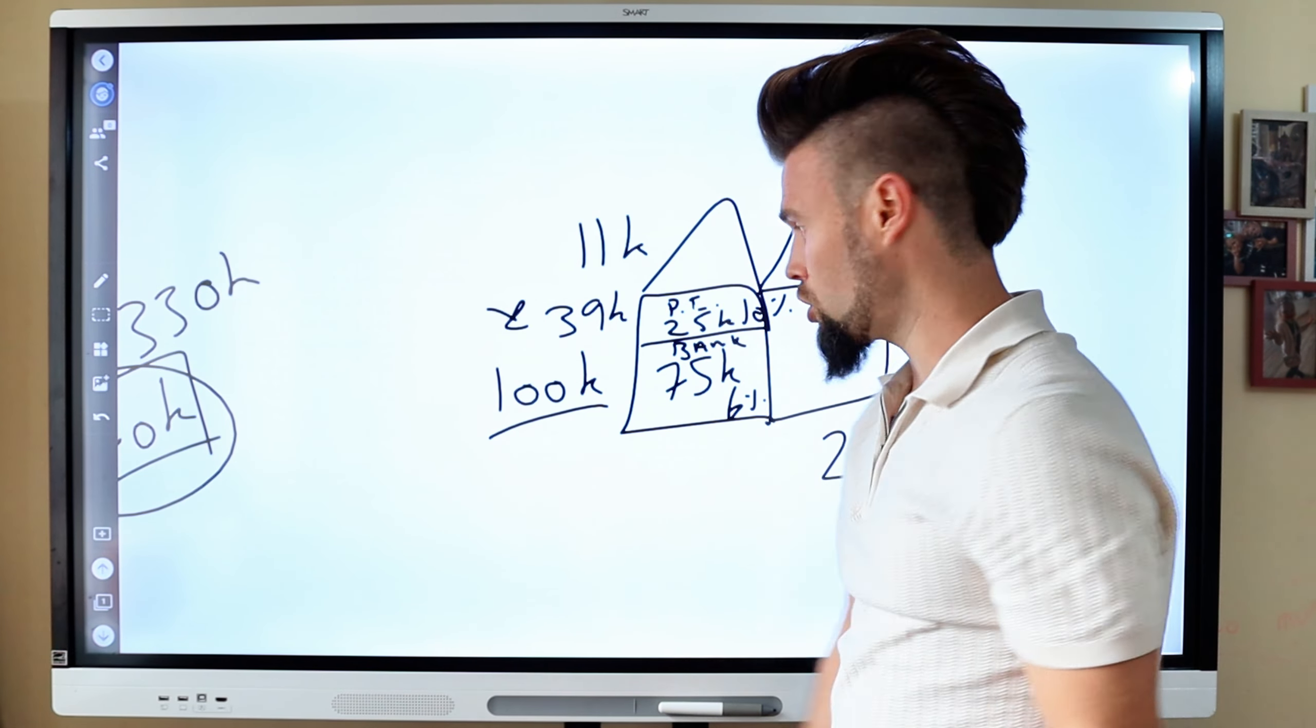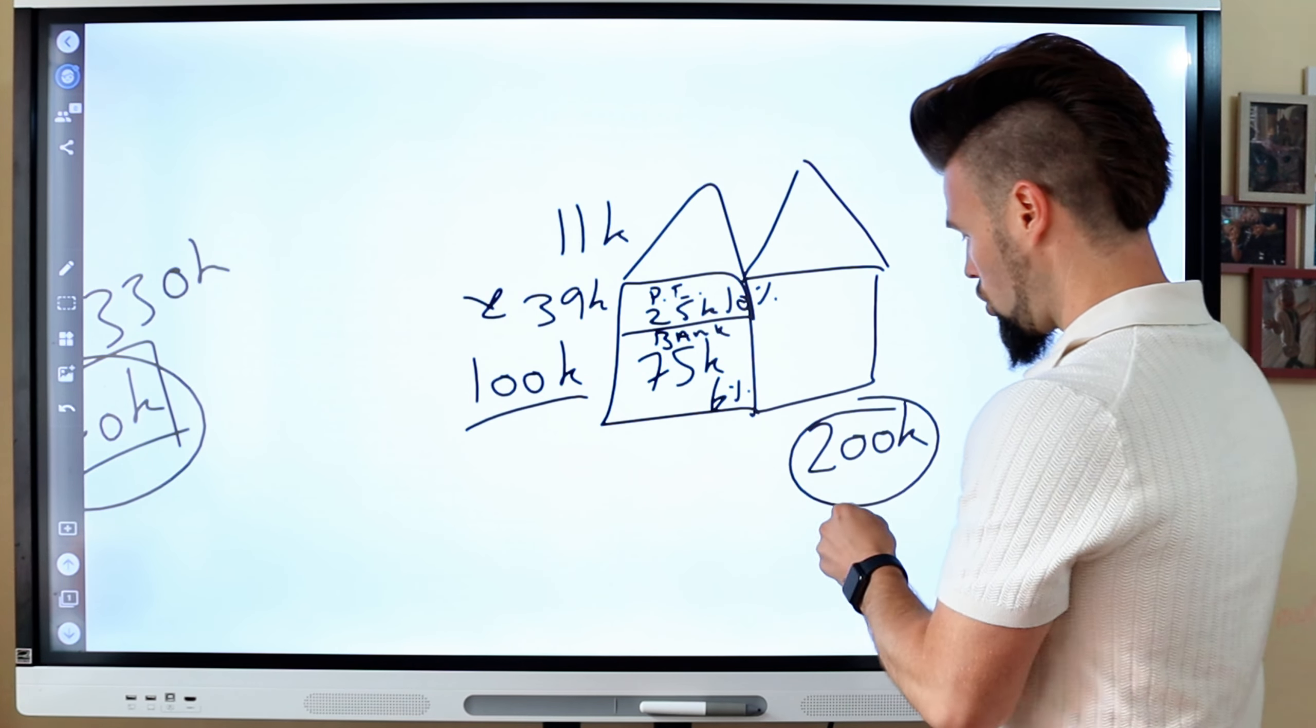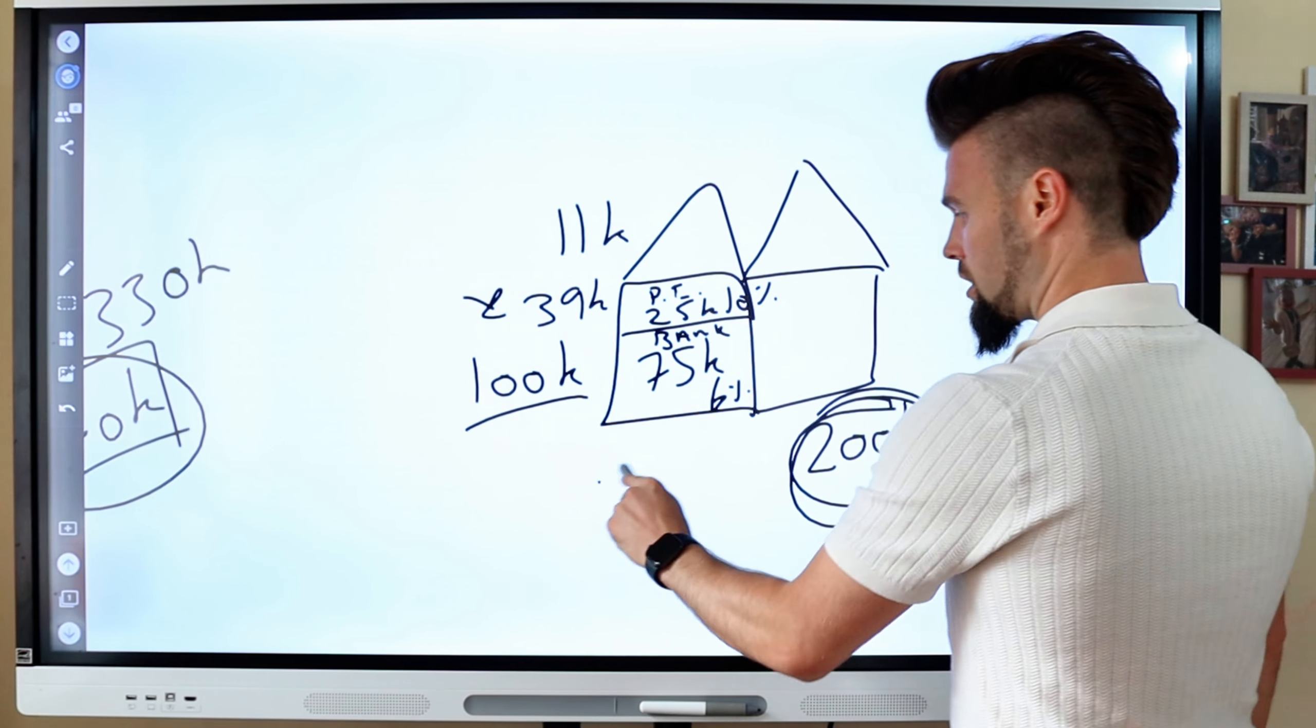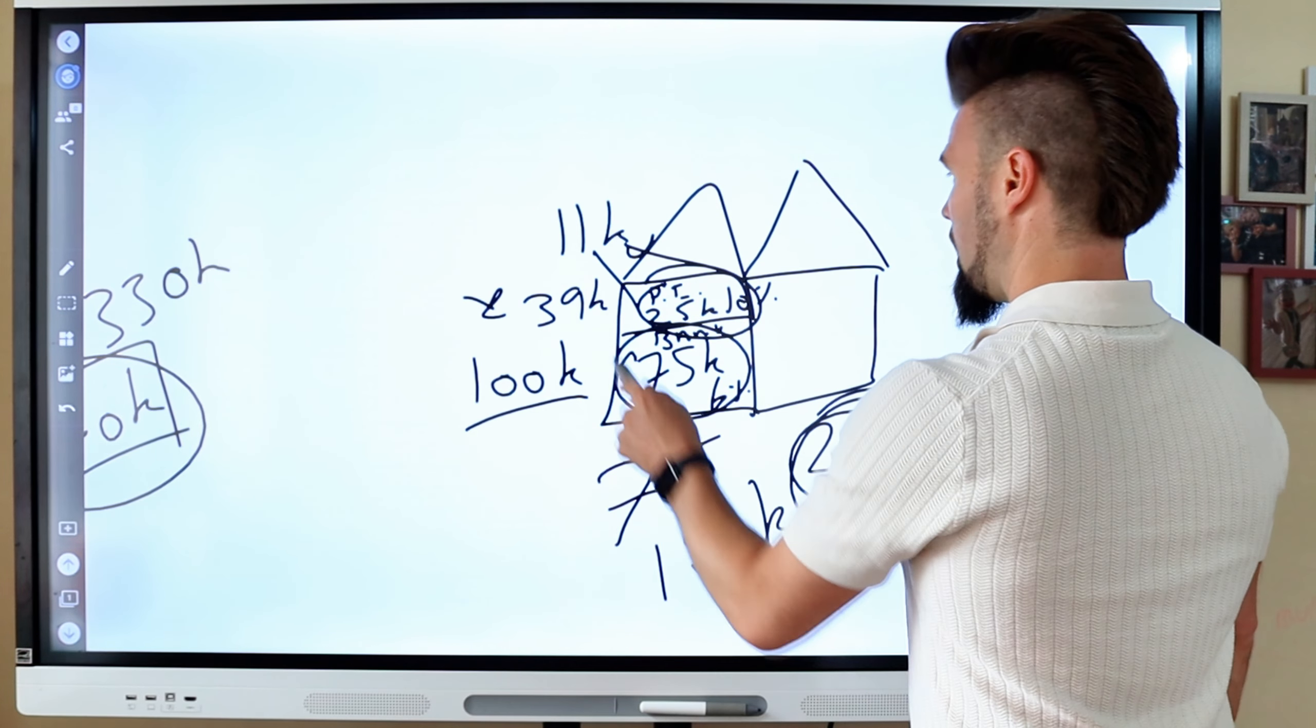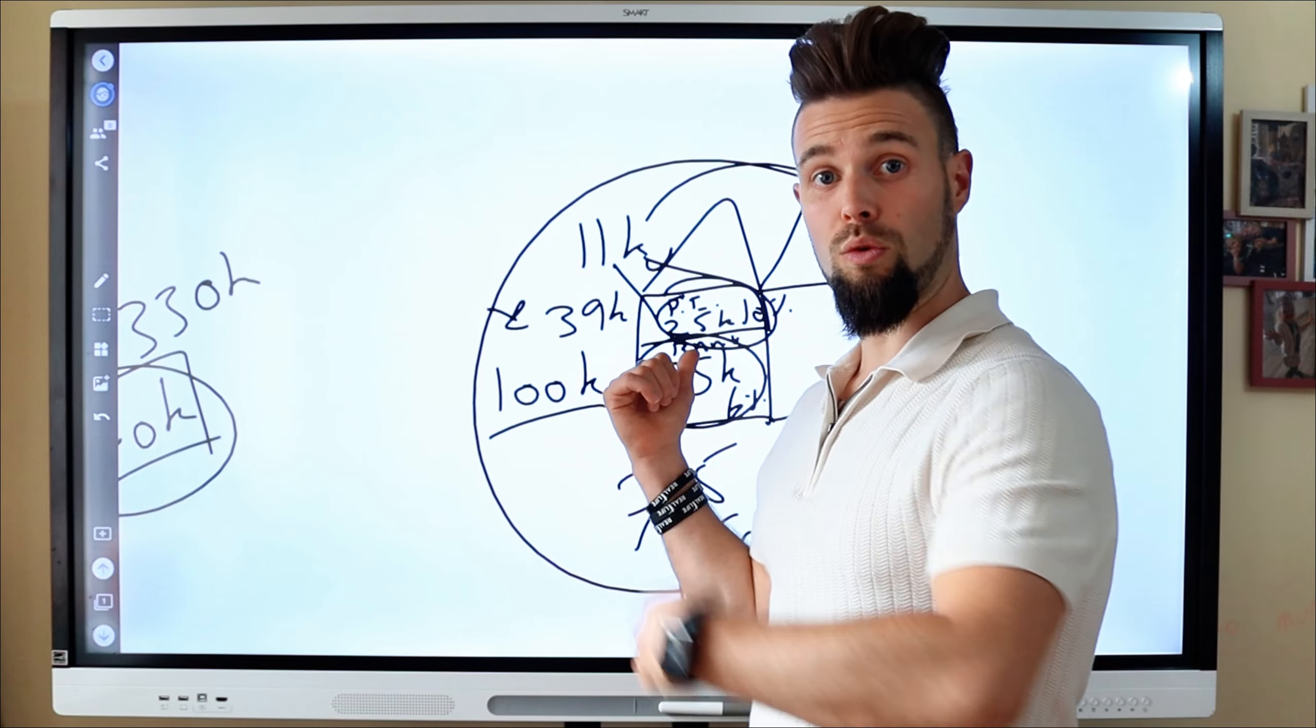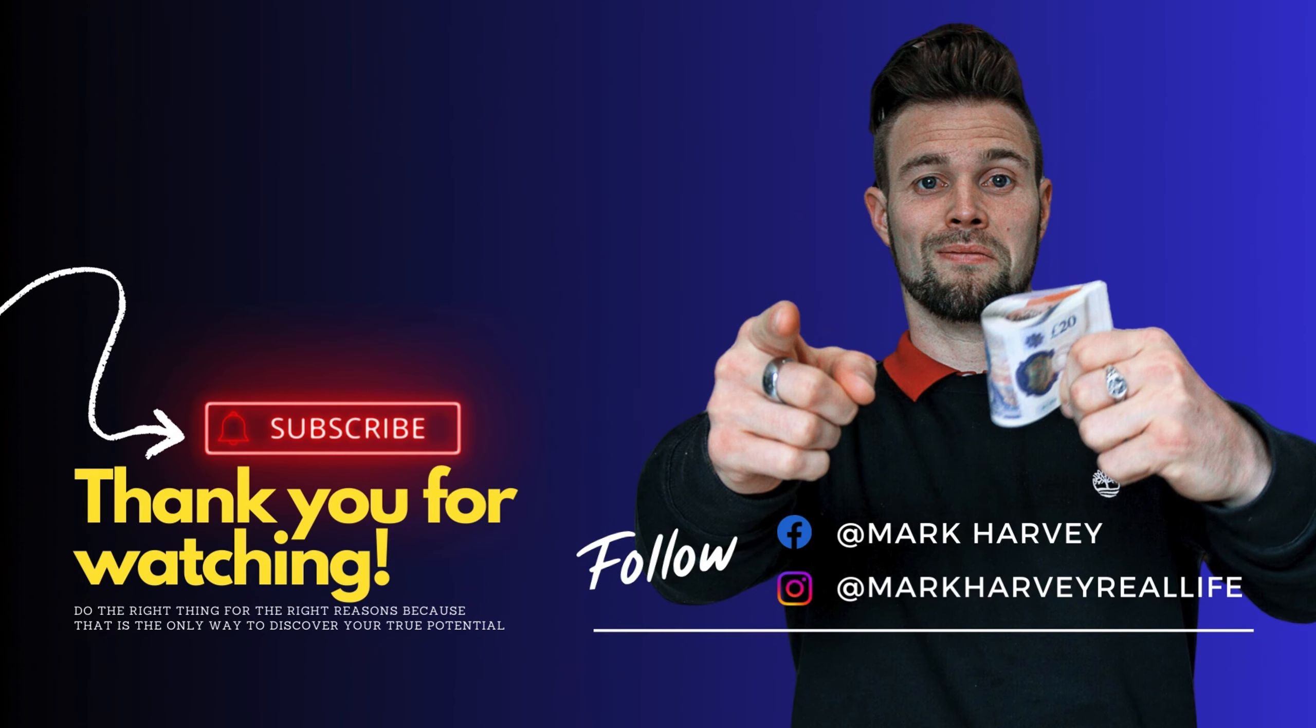This actually made the property worth 200,000 pounds. So what I can now do is I can either sell it and think about it. How much money am I in now? I'm 100,000 pounds for the purchase. And I'm now 39,000 split between the bank lending it to me and the private investor also lending it to me. So this money is at 6% and this money is at 10%. This all adds up to 11,000 pounds of interest. And this is the one that people leave out when they're showing you numbers of the cost of borrowing.